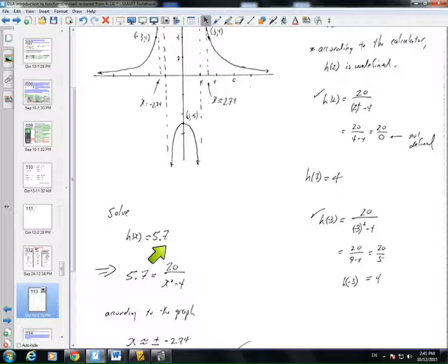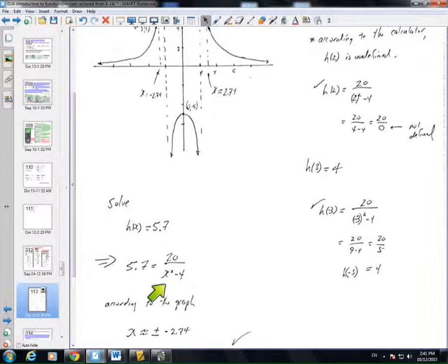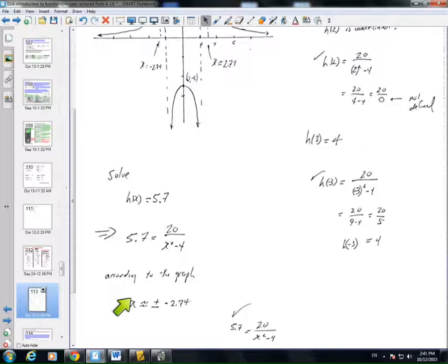The next question, solve h(x) = 5.7. Here you can see I wrote down the equation that I'm solving, and then I say that, according to the graph, we should have x equals approximately negative 2.74 or positive 2.74, so plus or minus. And I shouldn't have had that extra negative there, but whatever.